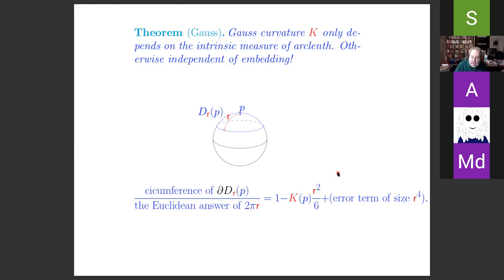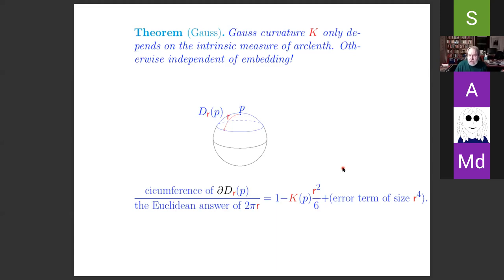I began the lecture talking about topology of surfaces — an invariant called the genus and the related Euler characteristic. Now I've been talking about the Gauss curvature of a surface, which is not a topological invariant. It has to do with the Riemannian geometry of the surface — we've introduced a notion of how to measure lengths of curves, and from that there is an associated notion of Gauss curvature.